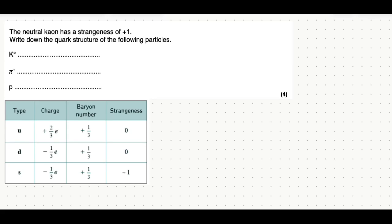In this video, I'm going to show you a four-step process to determining the quark composition of any specific particle. Starting off, you have to ask yourself: is this a meson or a baryon?